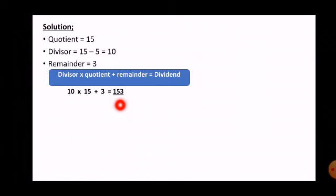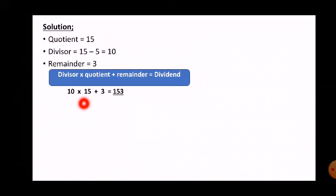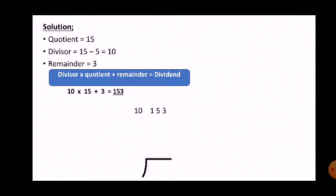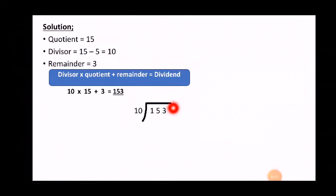Now the question arises: is this dividend correct? So we counter-check our answer by dividing this dividend by the divisor. If as a result we get the quotient 15 and the remainder 3, that means we found the correct dividend. So let's divide 153 by the divisor 10.